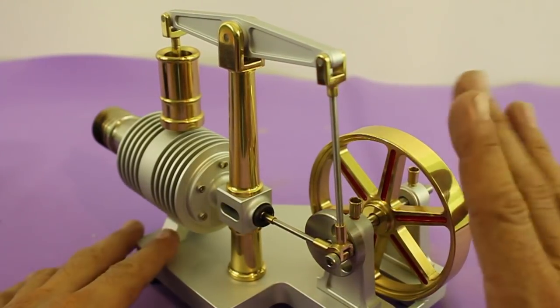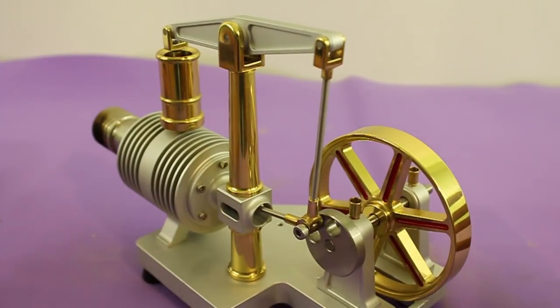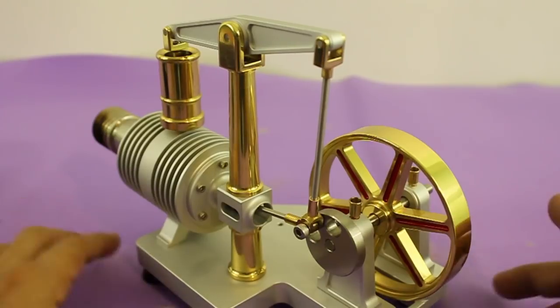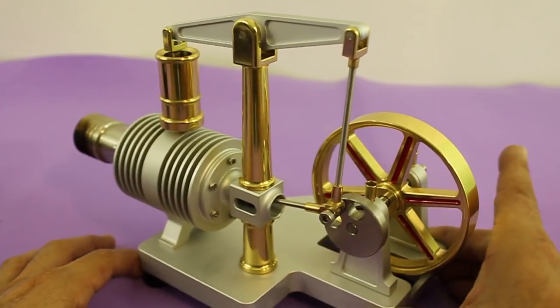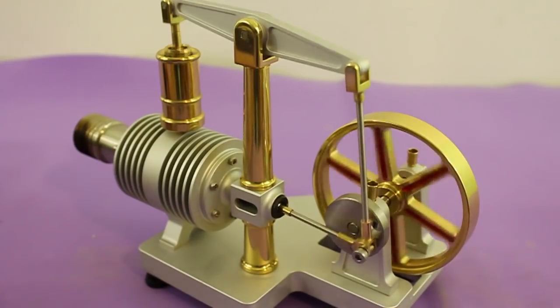These engines are one of the most efficient engines that are known. However, the main disadvantage of the Stirling engine is that it is very big and heavy compared to another engine of the same power. For that reason they are no longer used only as models such as this one.